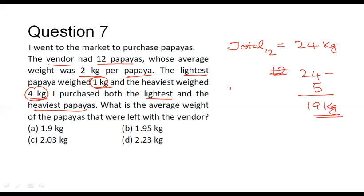Originally, there were 12 papayas. How many papayas did I purchase? 2, the lightest one and the heaviest one. So what is the number of papayas that is left with the vendor now, that is 12 minus 2, that is equal to 10.